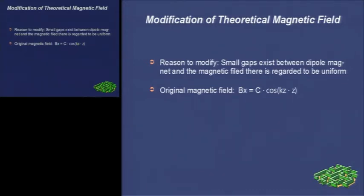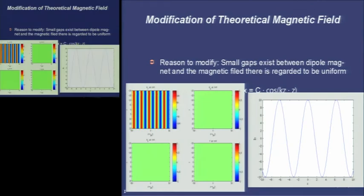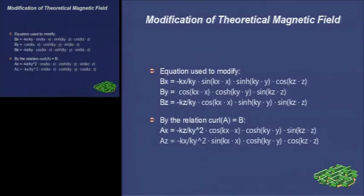For example, here is the modification of the magnetic field. In the original code, the magnetic field between gaps is regarded as uniform. So, we need to modify the field to be more accurate. Here are the representative images of the original field. By solving some differential equations, we can get the analytical results. Then, we just insert them into the codes and modify some parameters. Here is the result of the magnetic field.